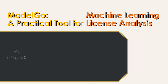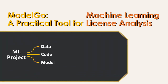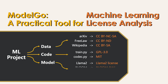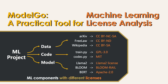However, the key difference lies in the variety of licenses in machine learning projects. In a machine learning project, there are typically three main components: data, code, and model. Each of these components is governed by distinct licenses.